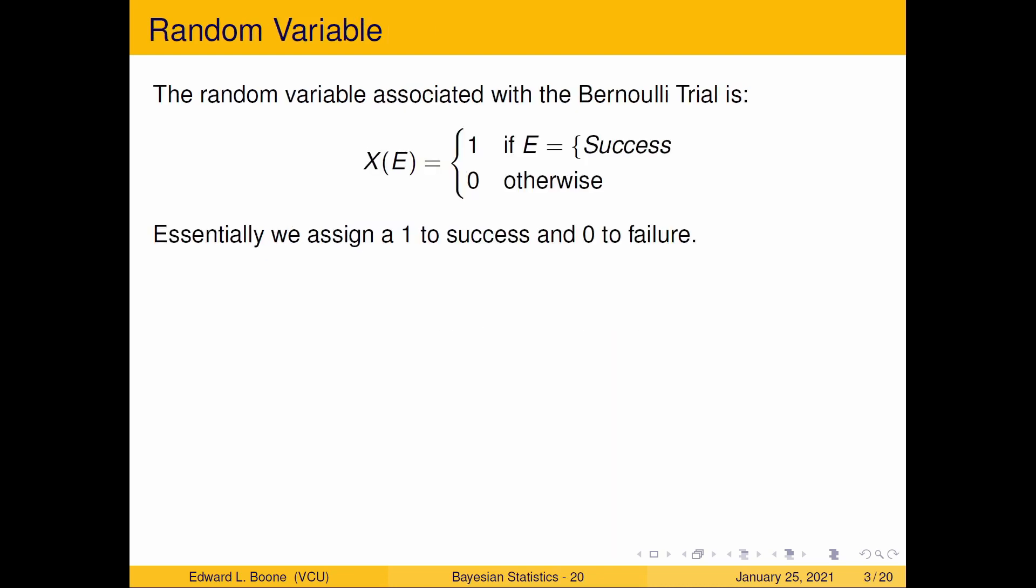The next step is a random variable. We've been talking about random variables. What do they do? They assign a number to the events or outcomes in a sample space. Here this is really simple since we only have two outcomes we only need two numbers. We're going to say it's going to be a one if it's a success and zero otherwise. Essentially we assign one to success and zero to failure.